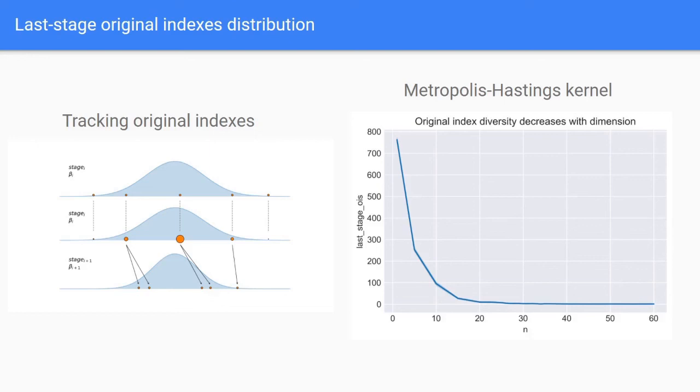Another experimental diagnostic we've been looking into consists in tracking the ascendancy of the samples. As we can see here, in any given stage each of its samples is a descendant of a sample from the previous stage. This means that by giving each original sample an index and keeping track of where each sample originated from at each stage, we can generate an ascendancy tree. Then we can know from which one of the original samples did any of the last stage samples originate from. In the right side picture we have plotted how many of the original indexes are present in the last stage as a function of dimension. We can see that the diversity of original indexes falls sharply as the dimension increases.